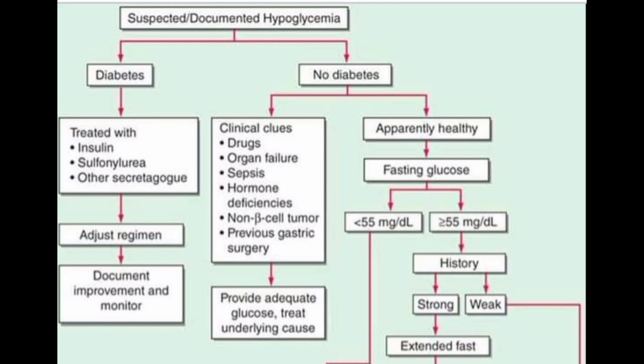If the fasting glucose is more than 55, we go and check the history. If the history is strong — for example, the patient has not been taking food for hours — or if the history is weak — for example, the patient is doing well and took food just one hour ago — the approach differs, and I will discuss what to do in those patients in the next picture.